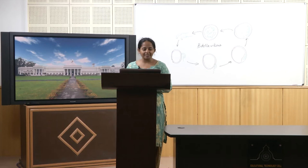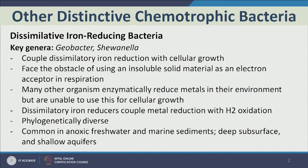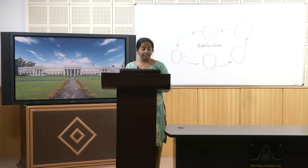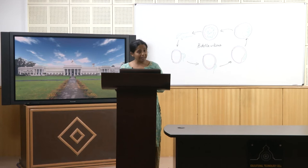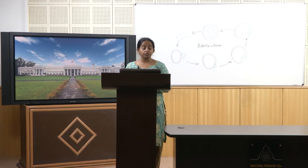So let us look at dissimilatory iron-reducing bacteria. The key genera are Geobacter and Shewanella, and they couple dissimilatory iron reduction with cellular growth — as they reduce iron, they take energy to grow the cells. They face the obstacle of using an insoluble solid material as an electron acceptor in respiration. Most microbes need to bring the electron acceptor into their bodies, but iron is not soluble in water — it is solid, and many times it exists like a metal — making it challenging for microbes to reduce it.